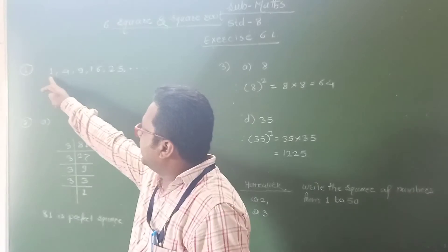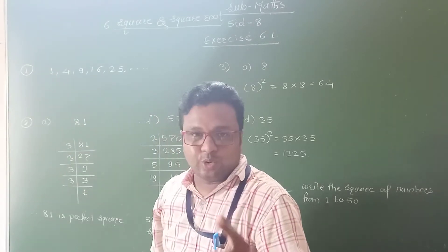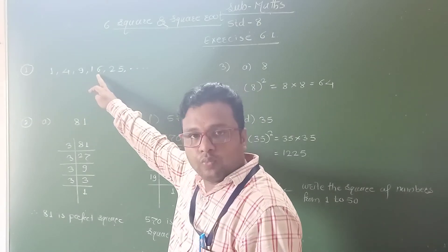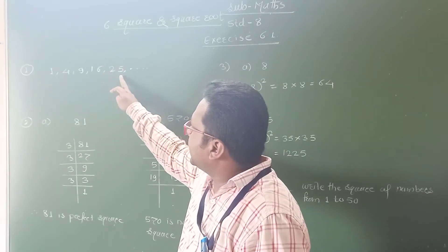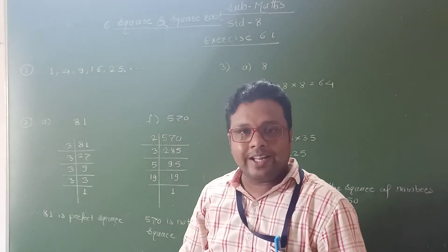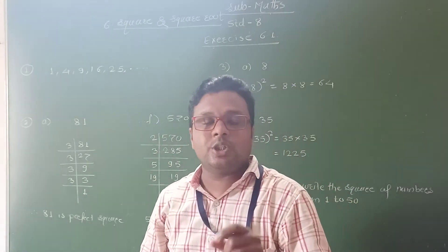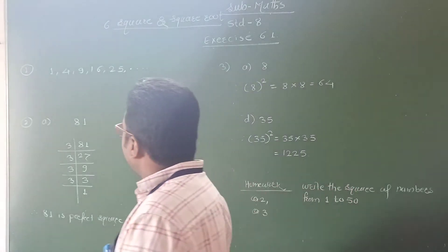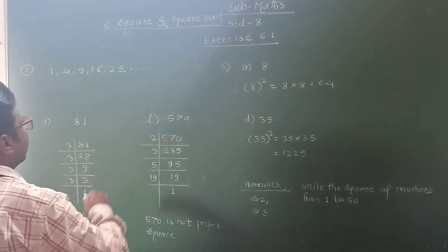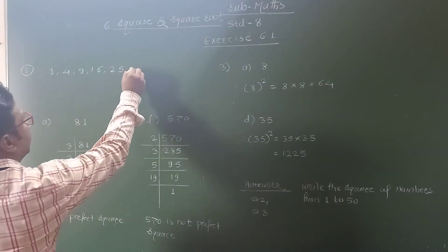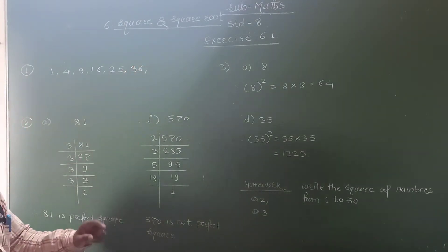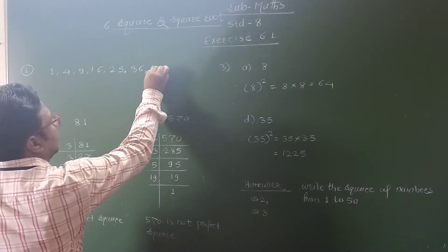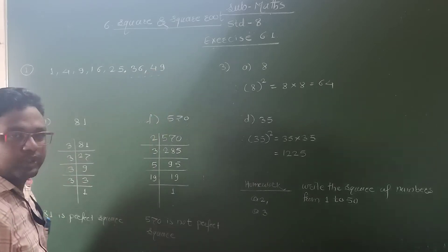1 is the square of 1, 4 is the square of 2, 9 is the square of 3, 16 is the square of 4, and 25 is the square of 5. Therefore, the next two numbers are the square of 6 and 7. So the next two numbers are 6² = 36 and 7² = 49. This is the answer for the first question.